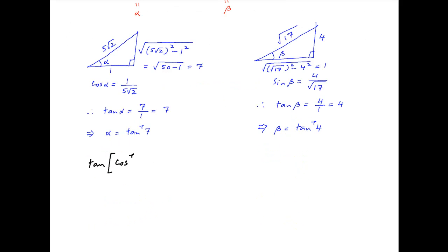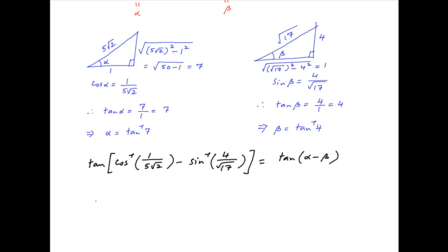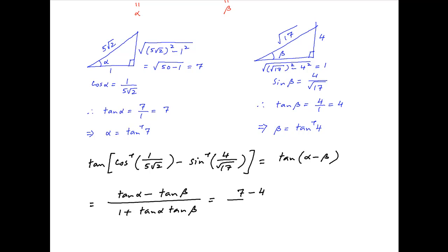Now the given expression is tan of (cos inverse 1 upon 5 root 2 minus sin inverse 4 upon root 17), which equals tan(alpha minus beta). Using the tan subtraction formula, this equals (tan alpha minus tan beta) upon (1 plus tan alpha times tan beta). Substituting tan alpha equals 7 and tan beta equals 4, this gives (7 minus 4) divided by (1 plus 7 times 4), which simplifies to 3 upon 29, the required answer.